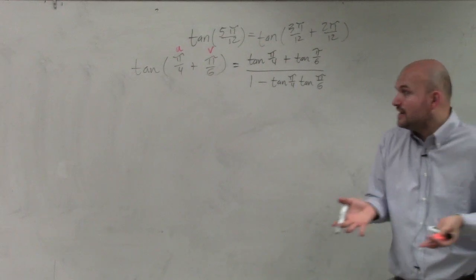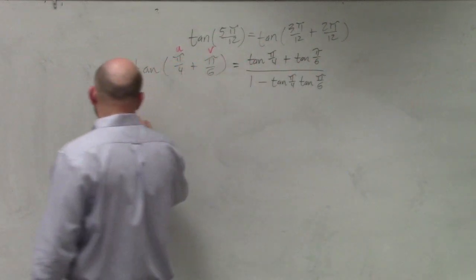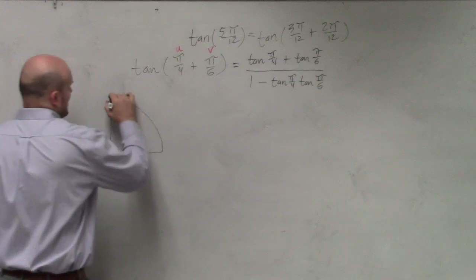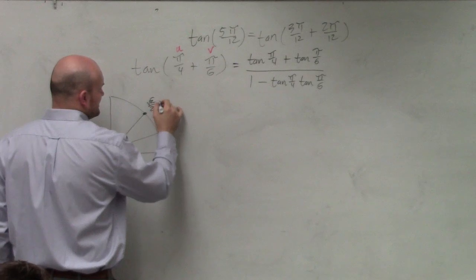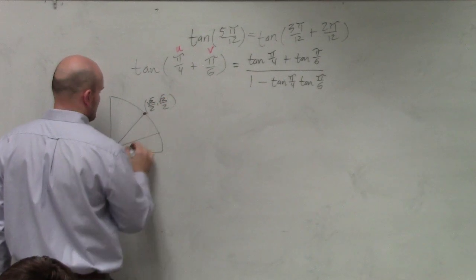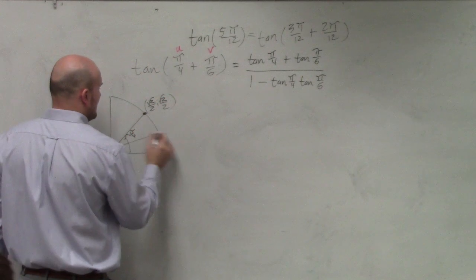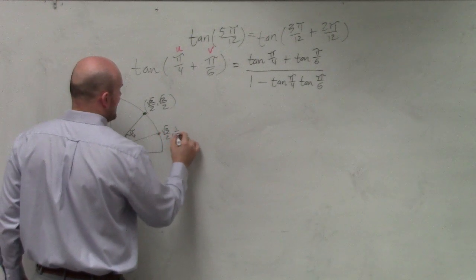Now we obviously need to simplify using the unit circle. So I have two angles, π over 6 and π over 4. I always remember π over 4. That's like the easiest one to remember. And π over 6 is square root of 3 over 2 comma 1 half.